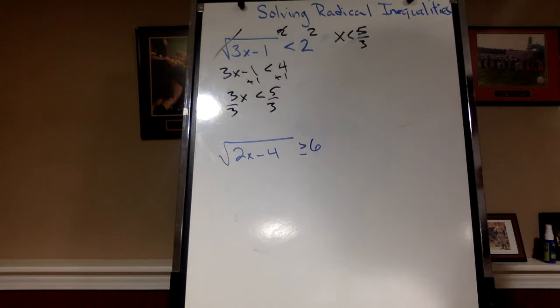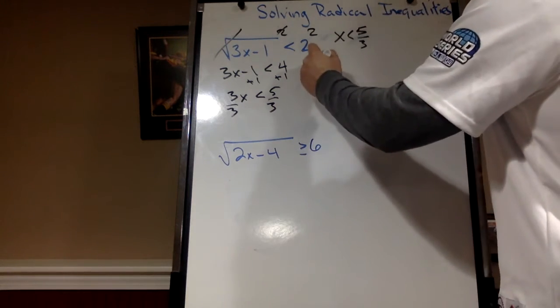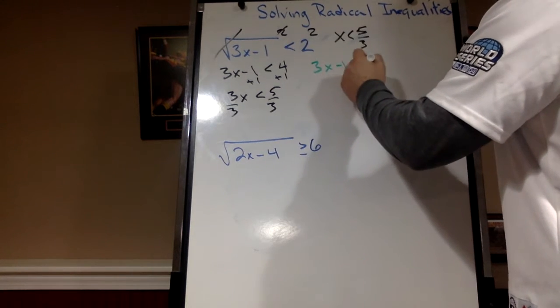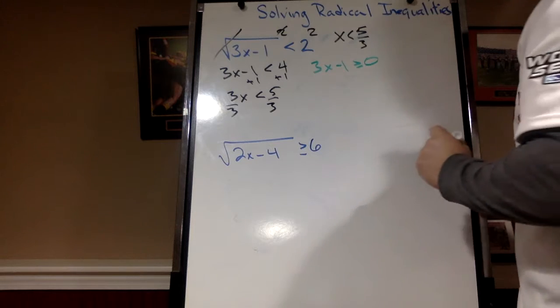We have rules when it comes to square roots or even roots. I can't have negatives inside there. So we're going to take what's inside there and say, hey, that's going to be greater than or equal to 0.